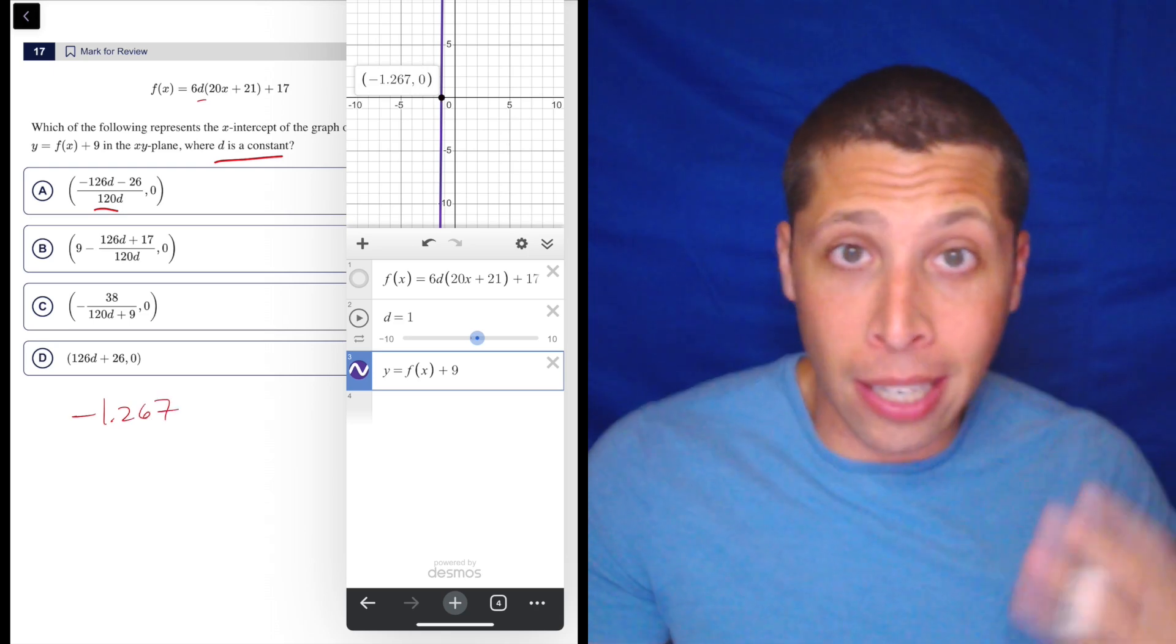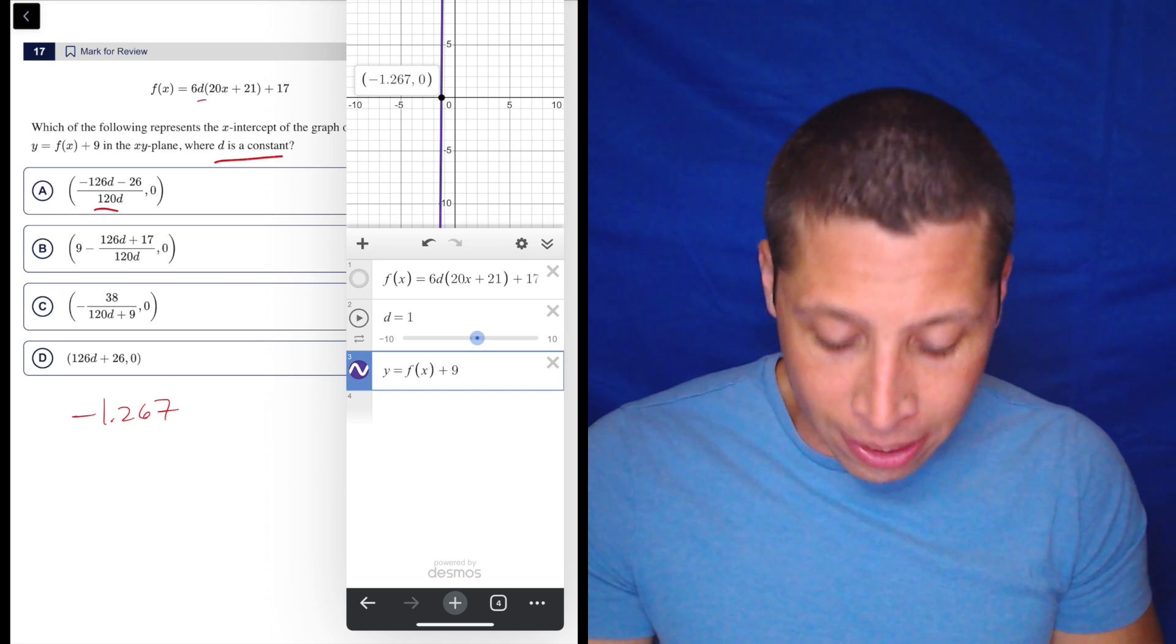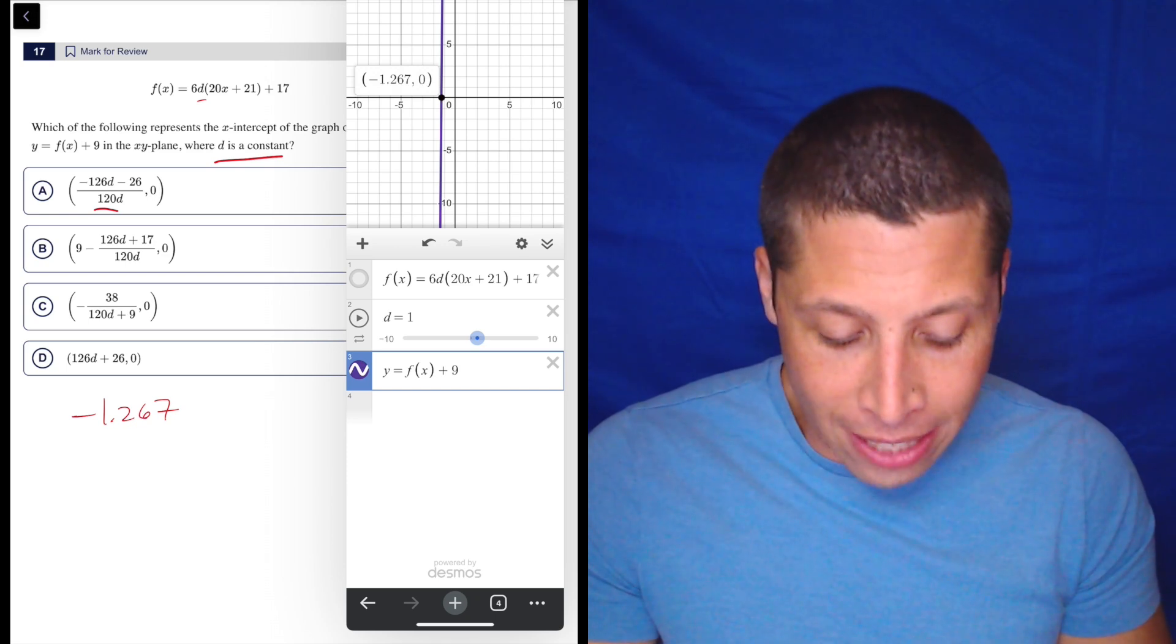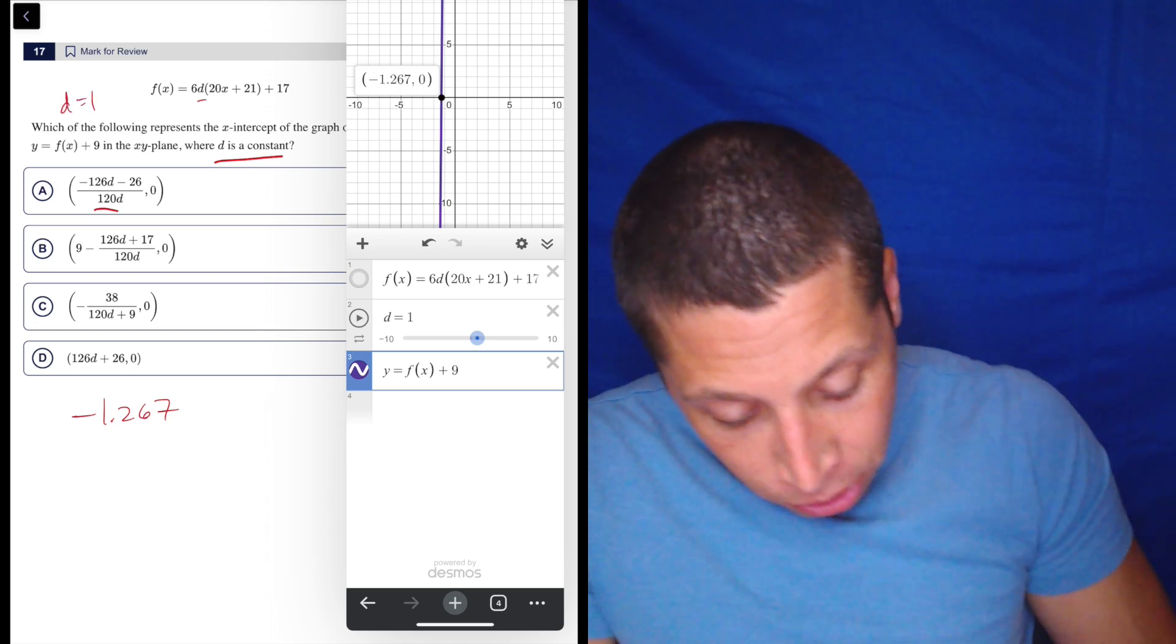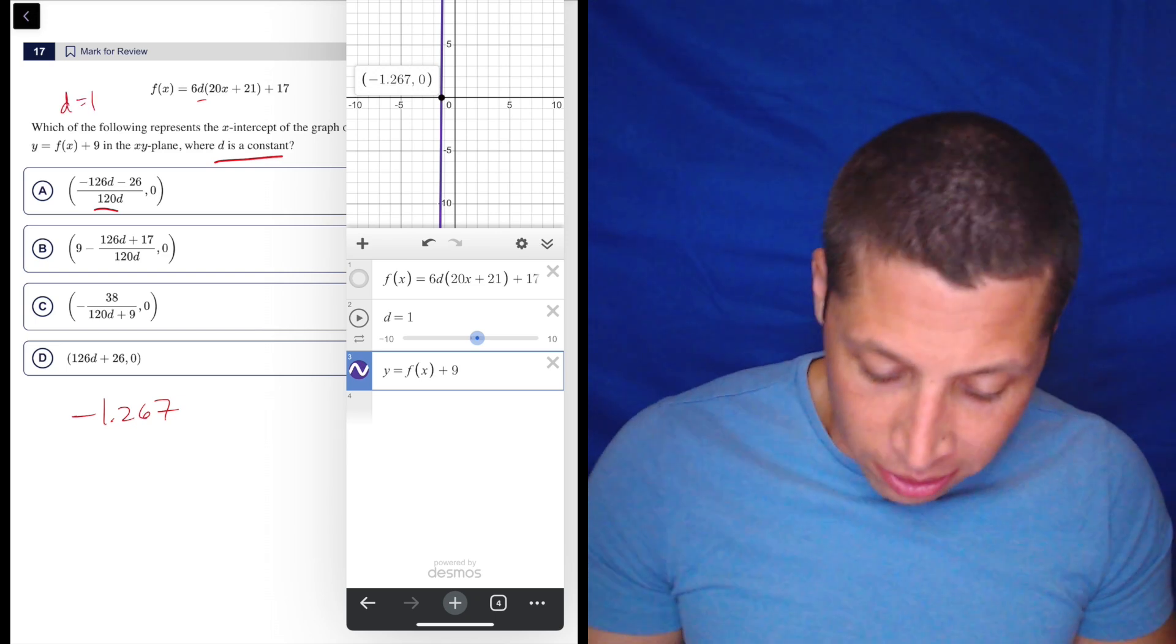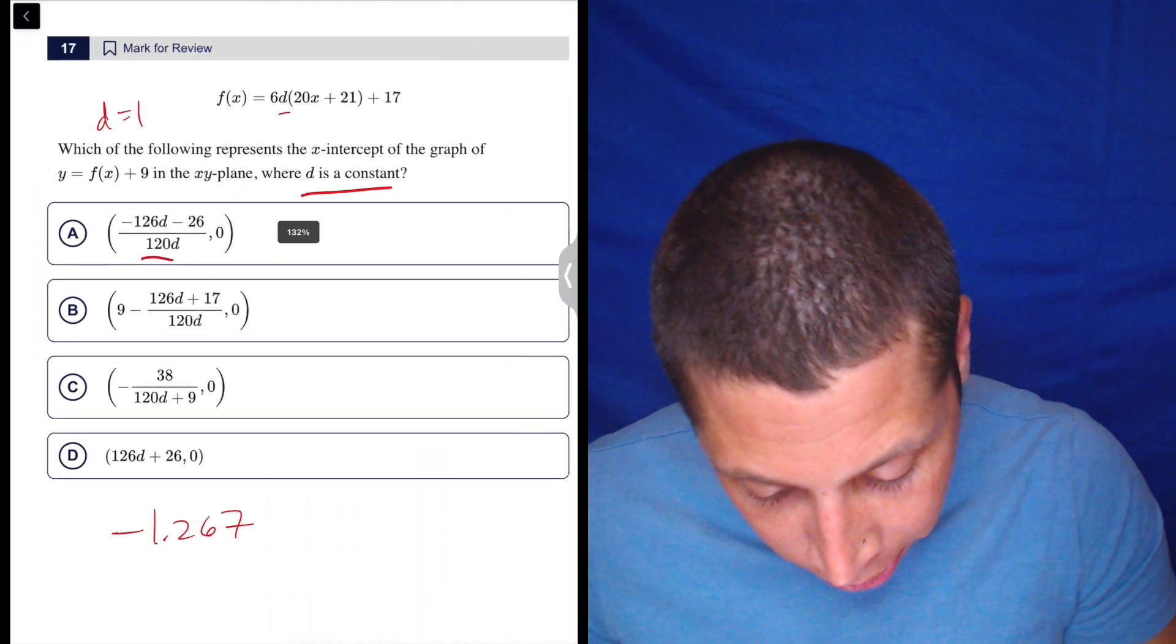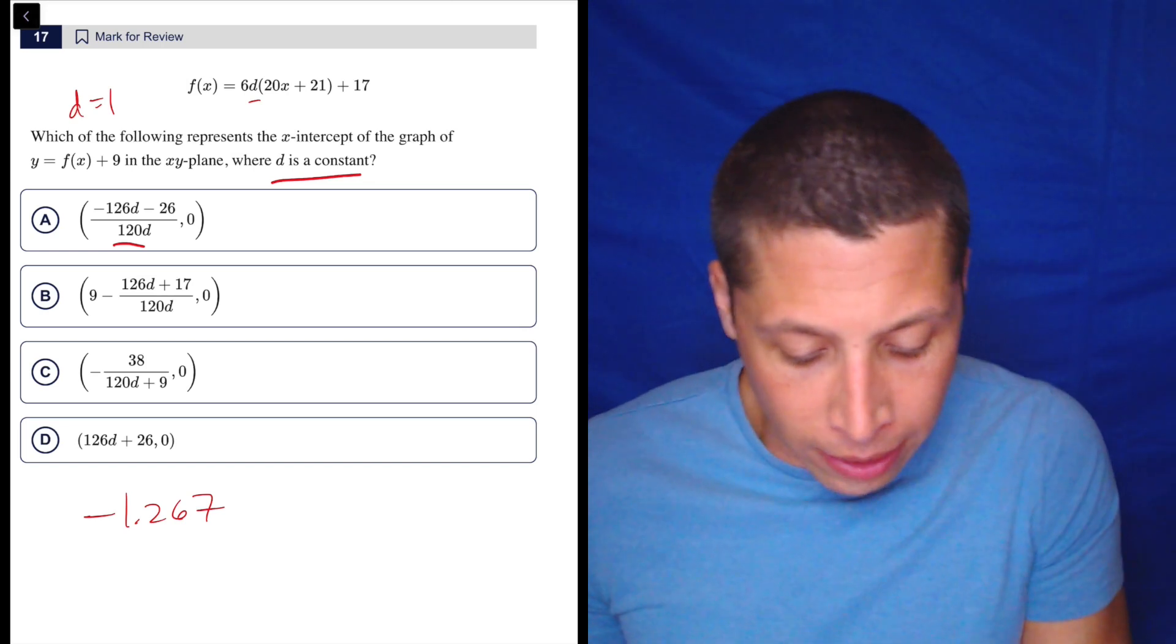That is the X intercept. But obviously that's not an answer. But I can turn all of these answer choices into numbers for X by using D equals one. I'm not going to use the Desmos calculator because these are kind of crazy looking. So instead, I'm just going to go to my regular calculator. So remember, if we plug in one, a lot of this is easy.